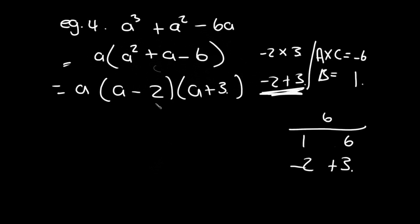Always remember: if the last term is positive, both brackets carry the same sign as the middle term. If the last term is negative, one bracket is positive and one is negative. And remember the rule: find two numbers that multiply to give a × c, and add to give b. Thank you for joining the lesson today.